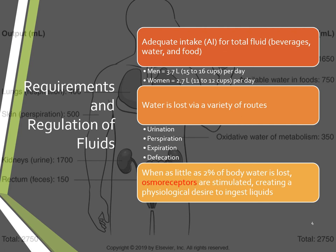Osmoreceptors are neurons in the hypothalamus that are sensitive to changes in serum osmolarity levels. A decreased blood pressure will also stimulate the release of the enzyme renin, which ultimately leads to the increased release of the hormone aldosterone by the adrenal cortex. This tells us we're thirsty and encourages us to drink water and replace what was lost.